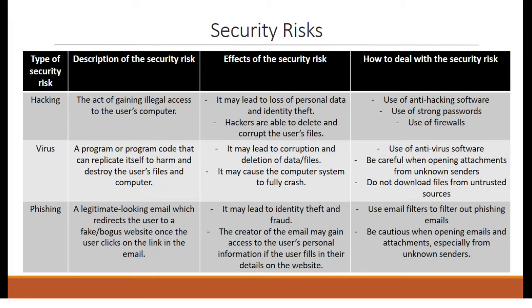Let's start with the security risks. In this chapter, you will be learning about six main security risks. First, hacking. It is the act of gaining illegal access to the user's computer. Its effects? It may lead to loss of personal data and identity theft. Hackers are able to delete and corrupt the user's files. To deal with them: use of anti-hacking software, use of strong passwords, and use of firewalls.